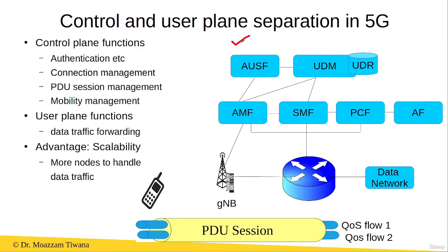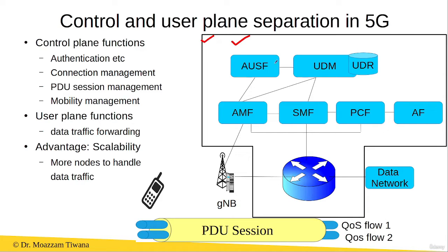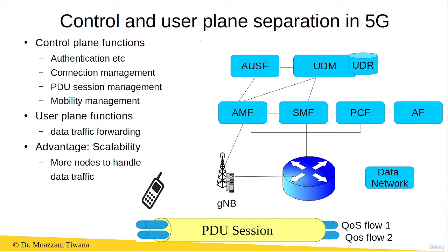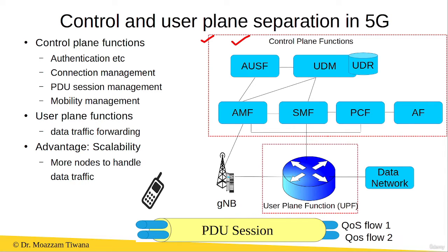This is the 5G network architecture. These are the network functions in the 5G core network, and these network functions are further subdivided into the control plane functions and the user plane functions. There is a clear distinction between the network functions in the control plane and the network functions in the user plane.